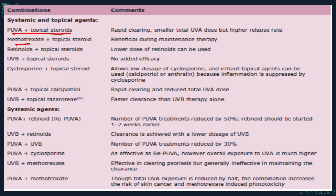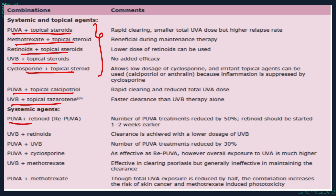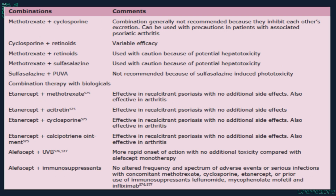Combination therapy examples include PUVA with topical steroids, methotrexate with topical steroids, retinoids with topical steroids, UVB with topical steroids, cyclosporine with topical steroids, PUVA with topical calcipotriol, UVB with topical tazarotene, and systemic combinations such as PUVA with retinoids, UVB with retinoids, PUVA with UVB, and PUVA with cyclosporine.